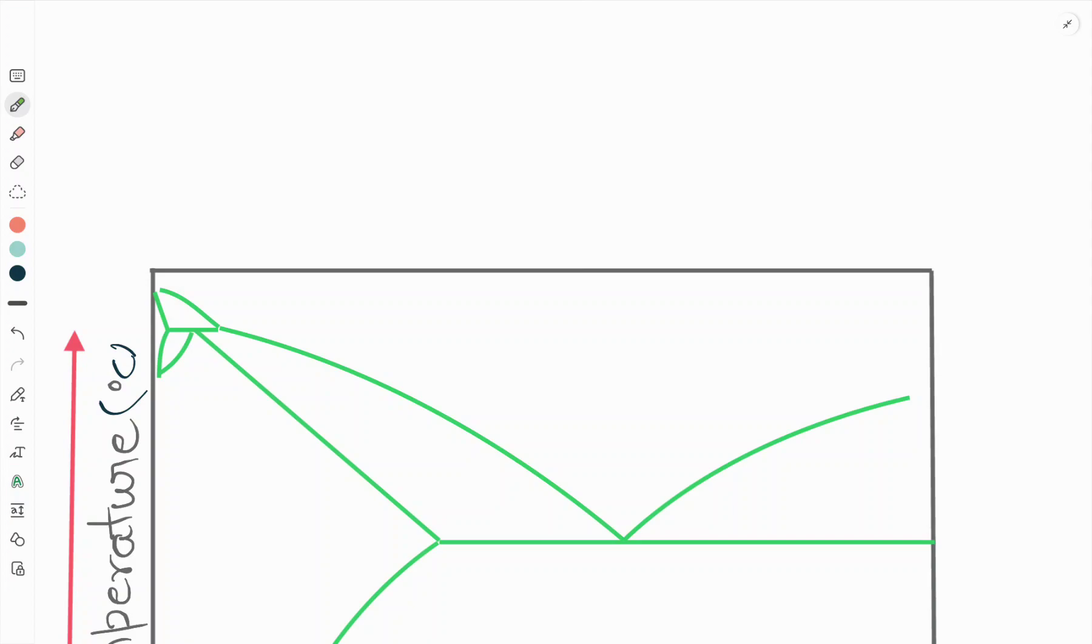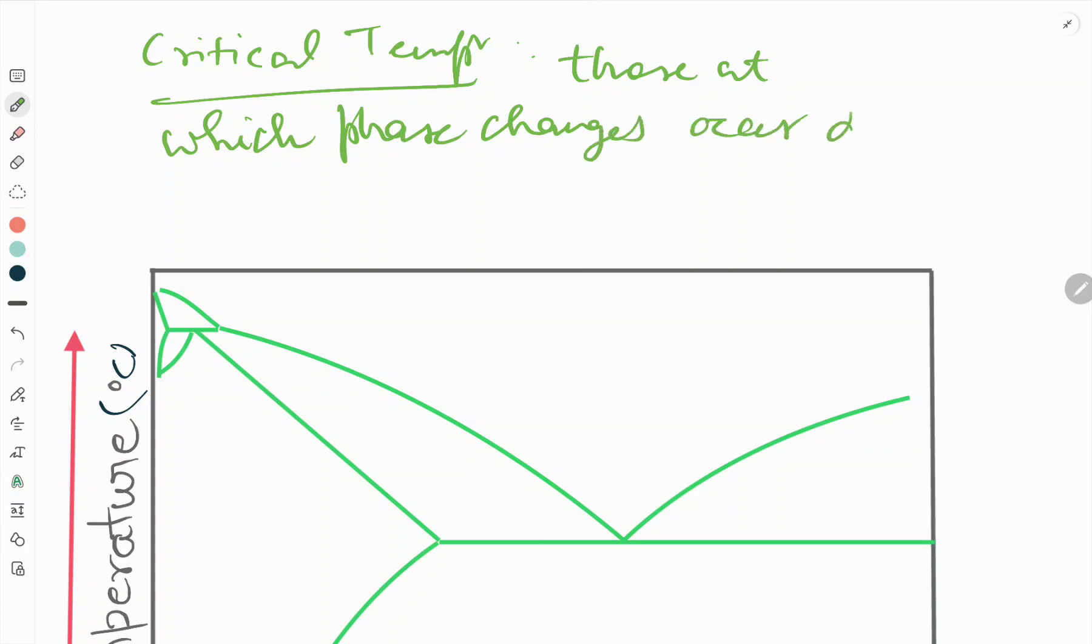What are the critical temperatures? Critical temperatures are those temperatures at which phase changes occur during heating or cooling process of an alloy.